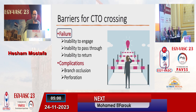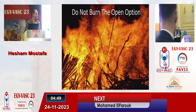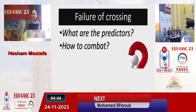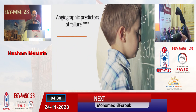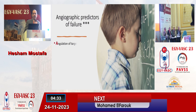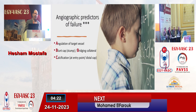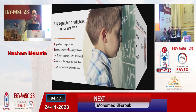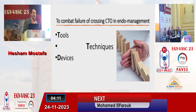We are going to focus on failure, but please, if you are going to tackle CTO by endovascular means, please don't burn the open solution. Failure of crossing — what are the predictors and how to combat this failure? We can summarize failure of crossing angiographically into: angulation of the target vessel, blunt cap, or bridging collaterals that take the wire away from the lesion, calcification at the entry point or at the distal cap, small diameter vessel, and extent and multiplicity of the lesions. The point is how to combat failure. The methods to combat failure are tools, techniques, and devices.